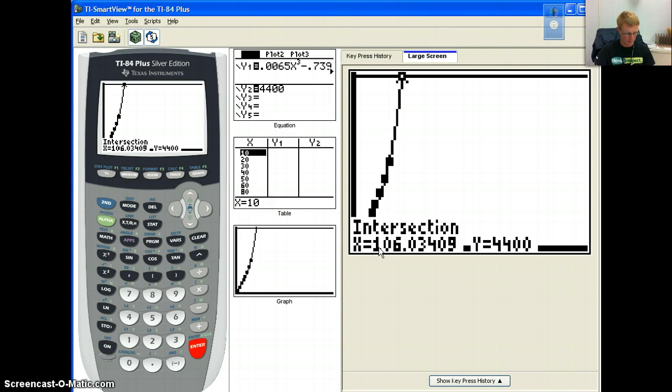So therefore, the booster rocket detaches at about 106 seconds after the launch, and that's all we were looking for in this problem. So what we've done here is we've shown you how to find a model, an equation off of a set of data. It gives you what the model is. Then I've also shown you how to find an intersection of two lines on your graph using the graphing calculator. So the second half of today was all with your graphing calculator.